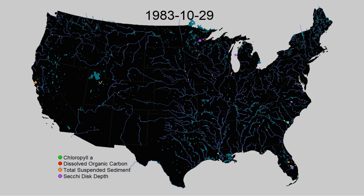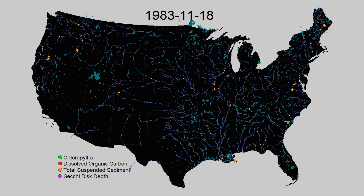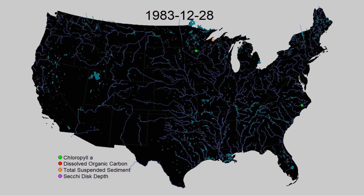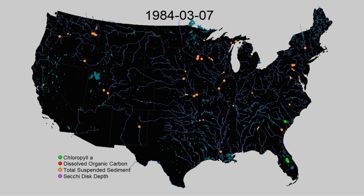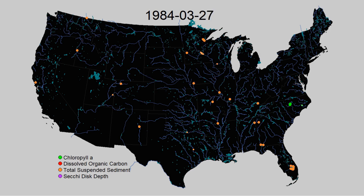This fragmented approach limited our ability to look at continental scale variation in water quality. But since the early 2000s, much of this data has been aggregated into a single portal called the Water Quality Portal. For lakes, researchers have also compiled a high quality regional dataset called LAGOS. This video shows any time someone took a sample in any large water body in either of these two datasets.